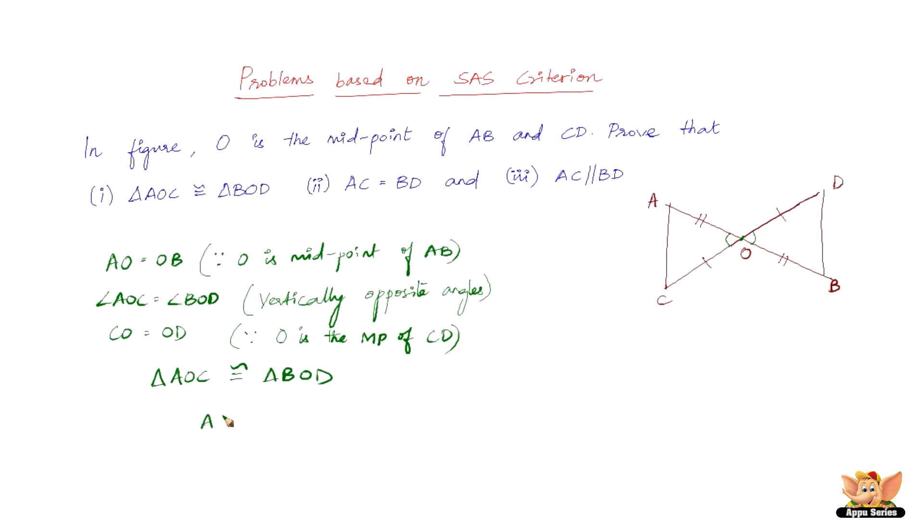Now, AC is equal to BD and angle CAO equals angle DBO. Why is that? That is because of the corresponding parts of congruent triangles are equal.